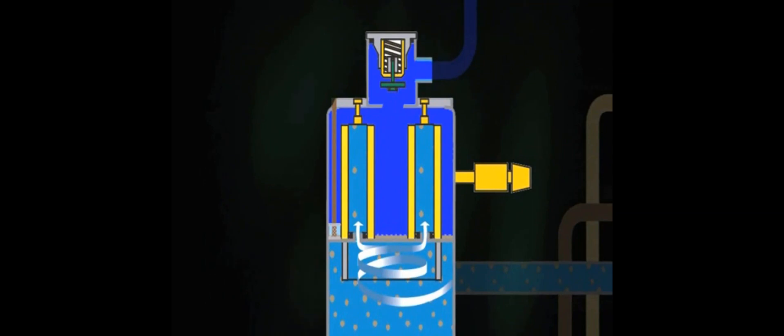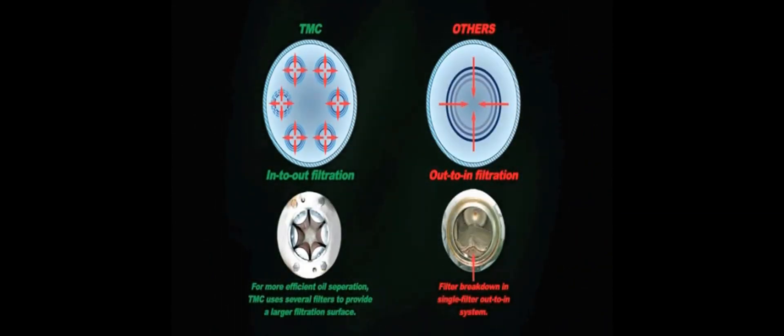The airstream then enters the oil separator filters. For increased safety, TMC uses in-to-out filtration with several filters to provide a larger filtration surface. In-to-out filtration also slows down the airflow, which gives better oil separation and improved compressed air quality. After filtration, the oil content is approximately two parts per million.